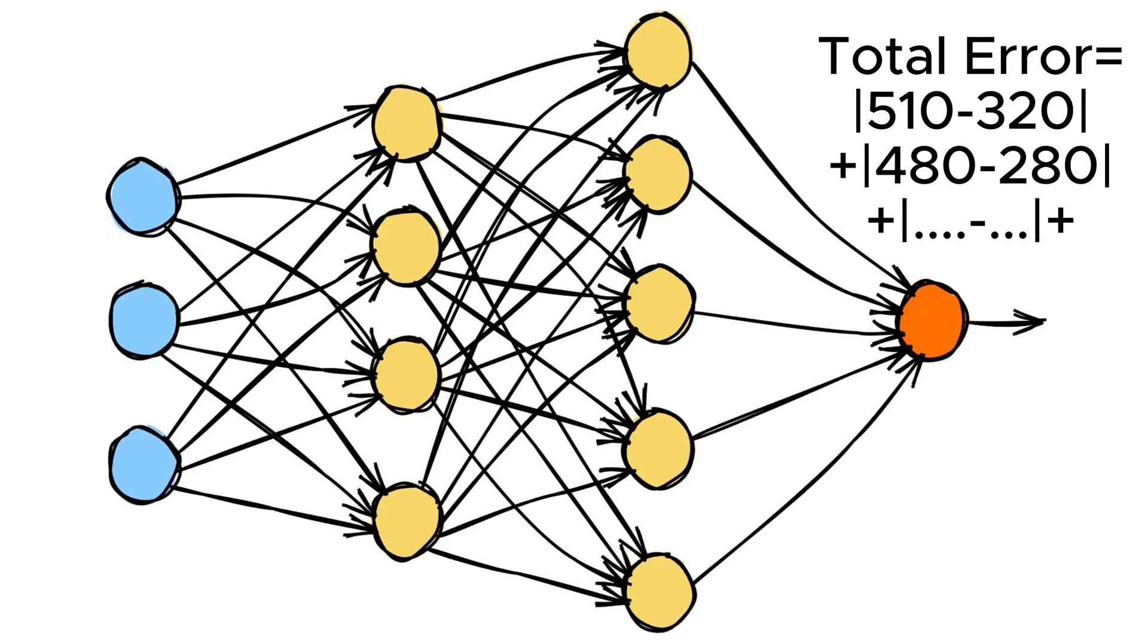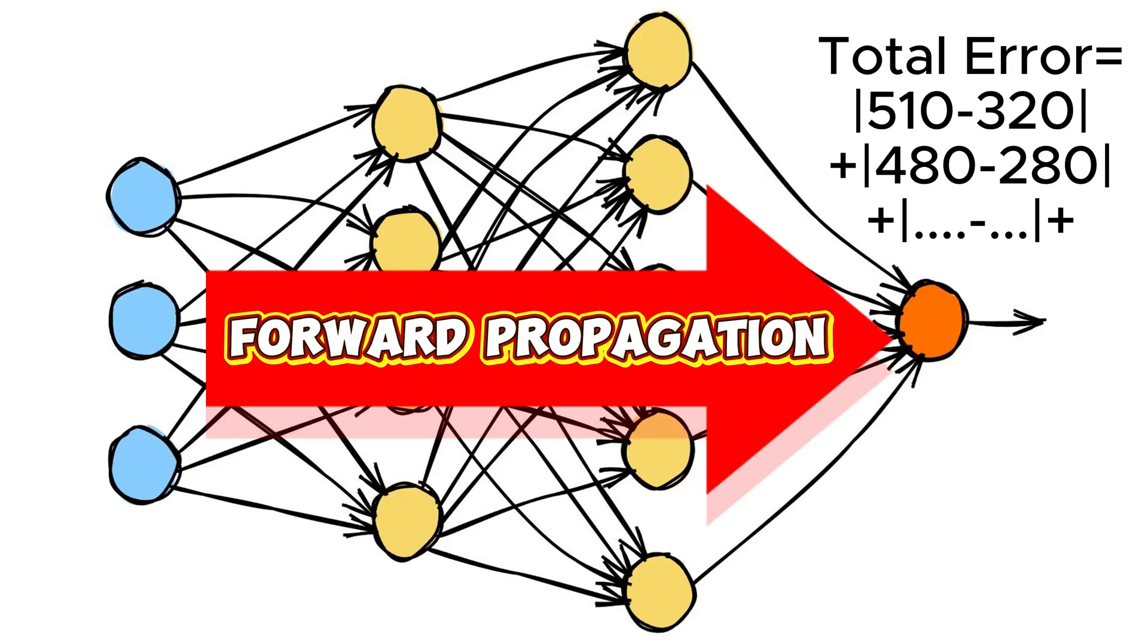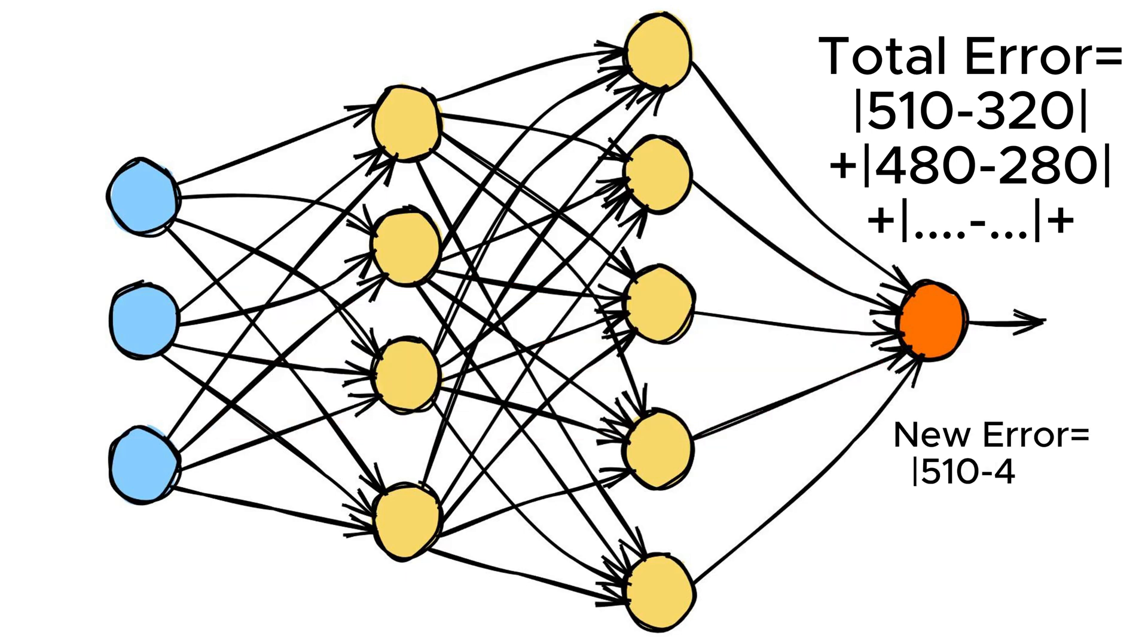As a result, when we perform another forward propagation with the adjusted weights and biases, the error should decrease.